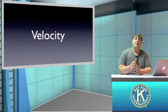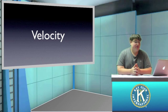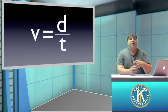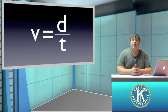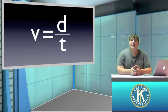That should hopefully clear up the directional component of velocity and any confusion involved with that. Now let's talk about how you'd find the velocity of a moving object. The most common equation you're going to use is v is equal to d over t, where v is velocity, d is distance, and t is time.